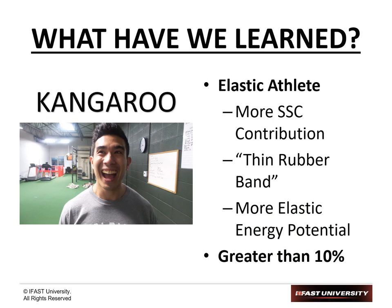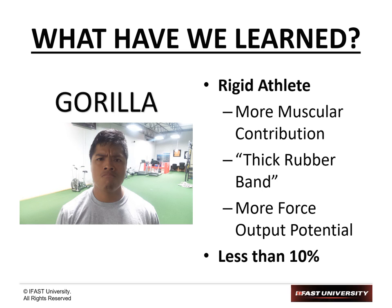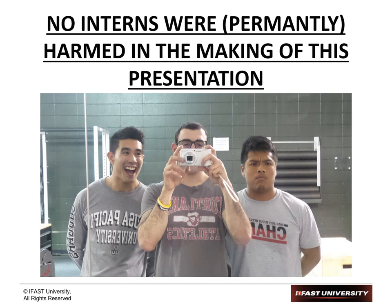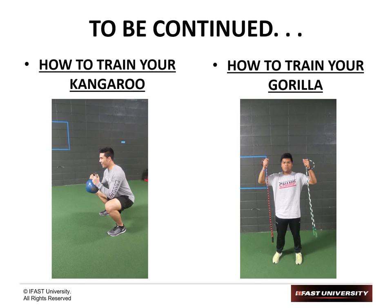In summary: kangaroos score greater than 10% on the Bosco jump test, have more stretch shortening cycle contribution, are the thinner rubber bands with more elastic potential. Gorillas like Pedro are more rigid, with more muscular contribution to movements, thicker rubber bands with greater total force output potential, scoring less than 10%. A big thank you to Pedro and Tim for enduring an hour of jump testing — it's exhausting. Next time we'll address how to actually train these elastic and rigid athletes, so tune in. Thanks for watching!